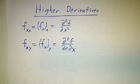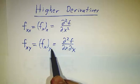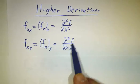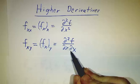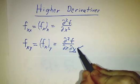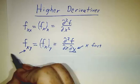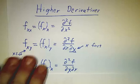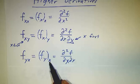You can also take a derivative with respect to x and then y. You take a partial derivative with respect to x, and then take the partial derivative of that with respect to y. We write that as f_xy, or as partial squared f over dy dx. For some reason, you read right to left on the dy dx notation, so dx means x first. In the subscript notation, you read left to right — x first.